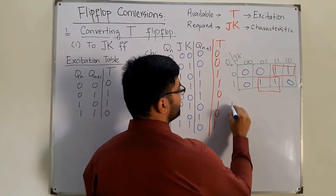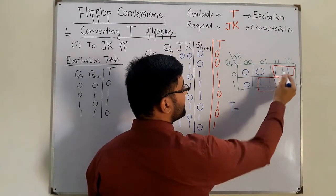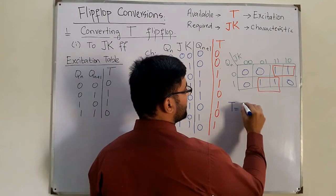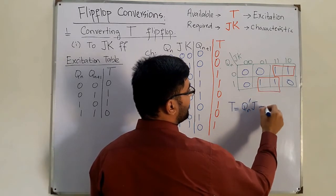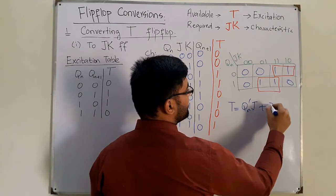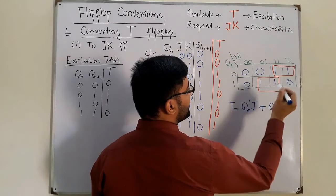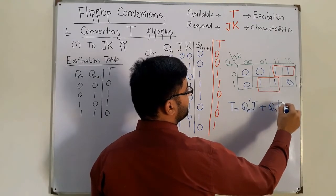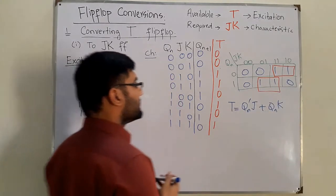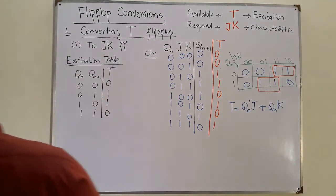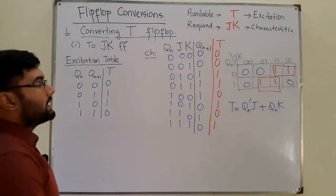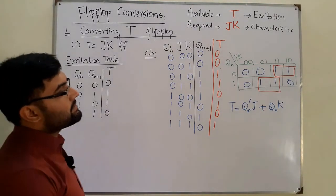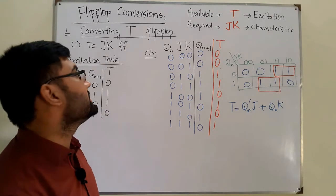We have two groups on the K-map. The first group gives Qn-complement · J, and the second group gives Qn · K. Therefore, T = Qn'J + QnK.